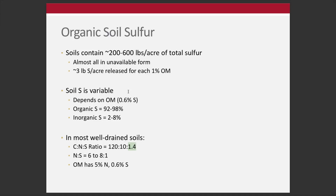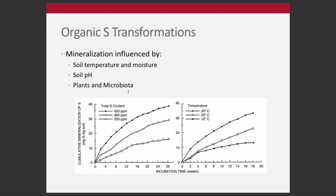Sulfur transformations and cumulative mineralization of sulfur are products of sulfur content — the concentration in that product — as well as temperature and soil pH. Mineralization is a biological process, so the same things that influence mineralization of nitrogen influence sulfur as well: temperature, moisture, pH, types of plants, and the microflora that are present.